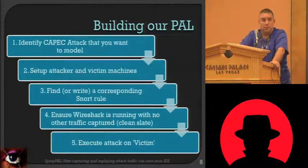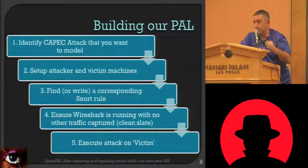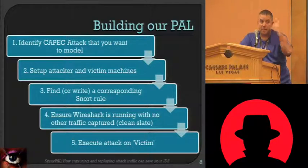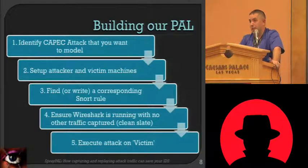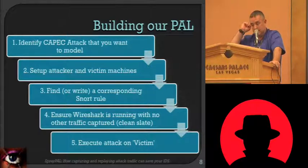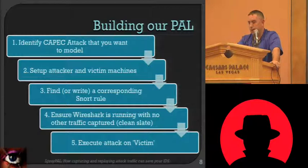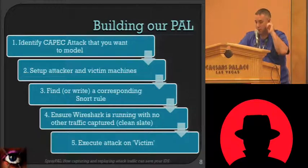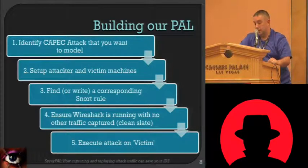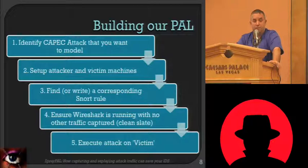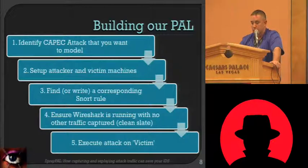How do we build out the PCAP attack library? Go out to the CAPEC dictionary, identify an attack you want to catalog, and set up your machines — those are the most labor-intensive pieces. Then test everything. We try to reuse and give credit to Snort rules that are already out there, as there's a very supportive community with a lot of good rules. If a rule doesn't exist, we'll write one. Once your rule fires, it's just a matter of starting Wireshark, running the attack, stopping Wireshark — and then you have a clean PCAP attack file.